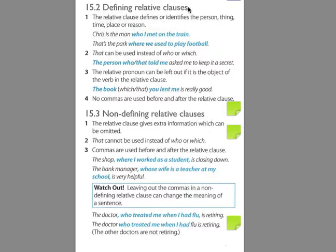Let's look at the defining relative clauses. Relative clauses that are defining identify the person, the thing, the time, the place, or the reason. So we can have something like: Chris is the man who I met on the train. That's the park where we used to play football. Or it was the time when I really wanted to have a good time. Or it was the place that I really loved to be in.